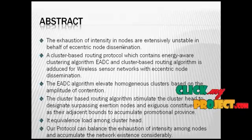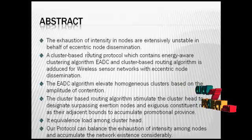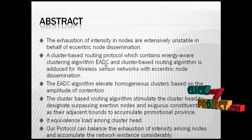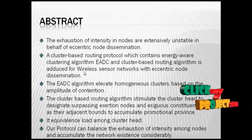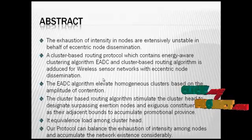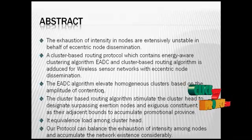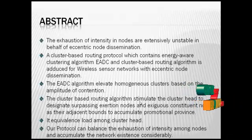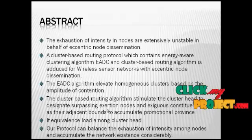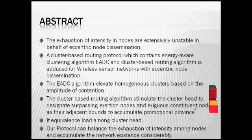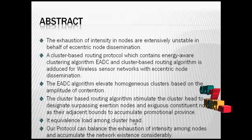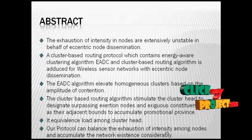The exhaustion of energy in nodes is extensively unstable due to non-uniform node distribution. A cluster-based routing protocol, which contains an energy-efficient clustering algorithm (EADC) and a cluster-based routing algorithm, is proposed for wireless sensor networks with non-uniform node distribution. The EADC algorithm creates homogeneous clusters based on contention radius, and the cluster-based routing algorithm selects superior relay nodes to balance energy load among cluster heads, extending network lifetime considerably.